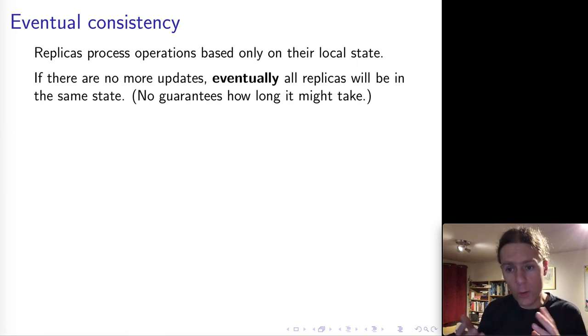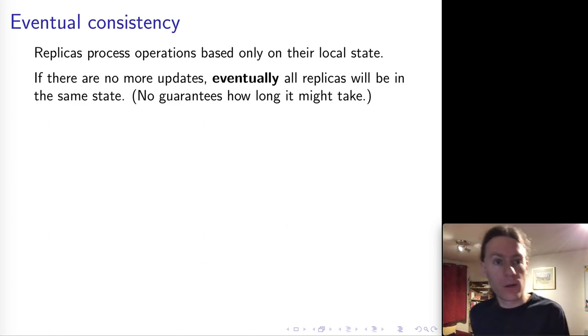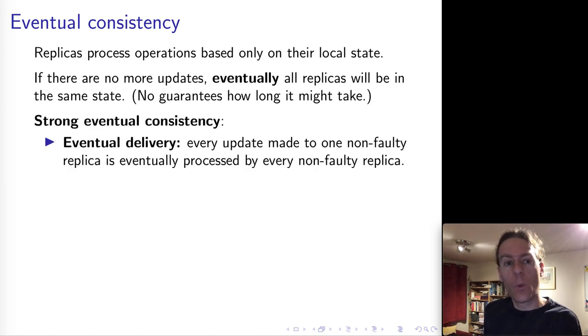What we want to guarantee is that if we assume that at some point the updates stop, then eventually after the updates have stopped, all replicas end up in the same state. This is okay, but it's a fairly weak property because, for example, what if the updates never stop? You could have a system in which updates are processed non-stop, and so in this case eventual consistency does not define what will happen because the premise of this definition is not true.